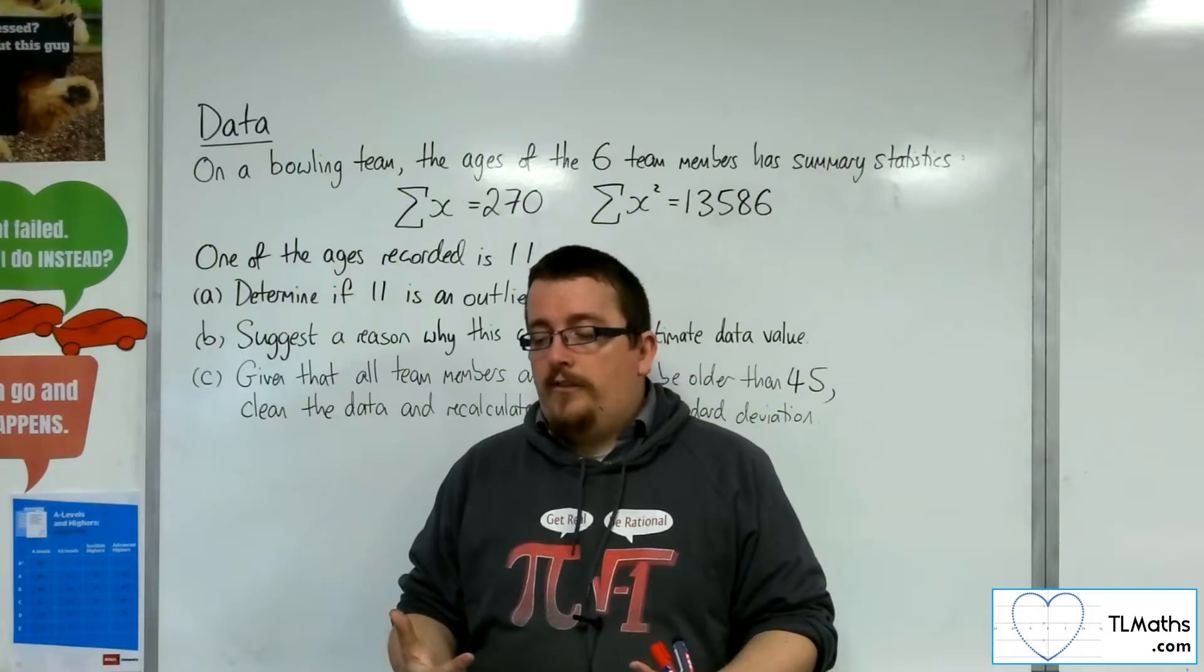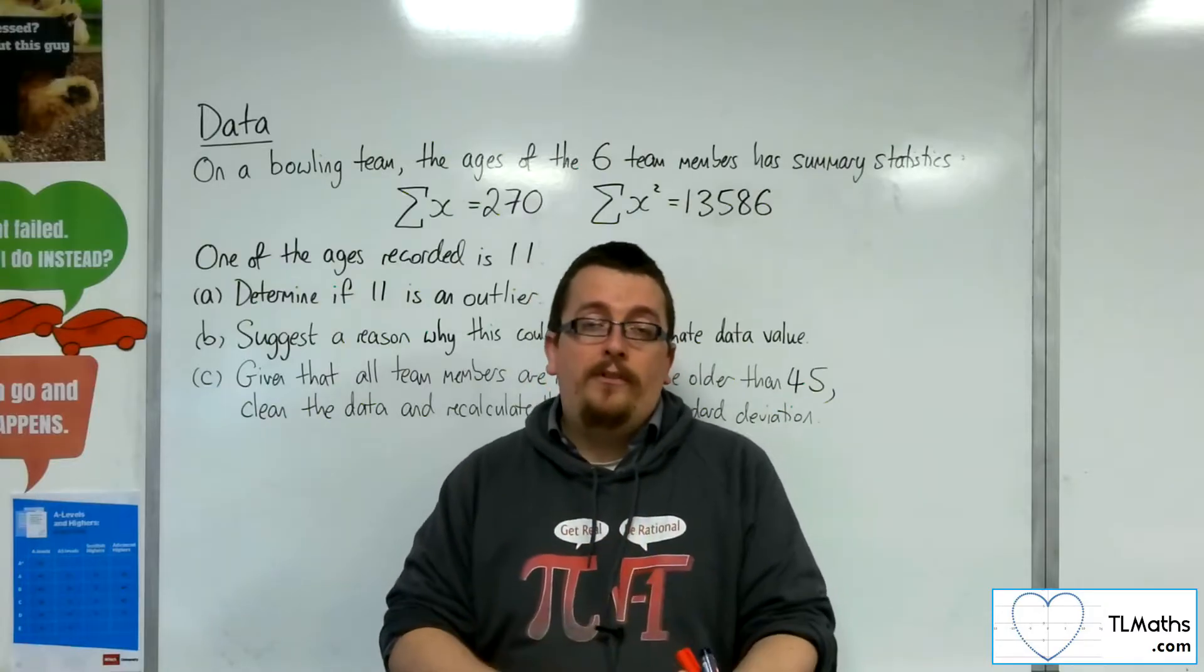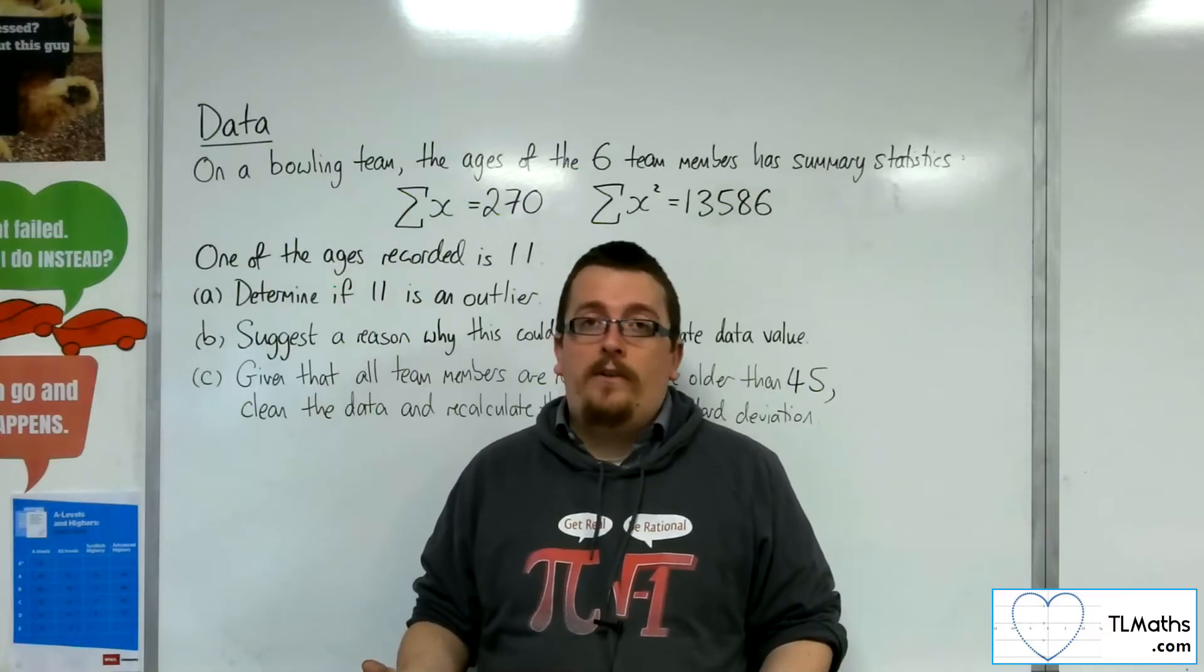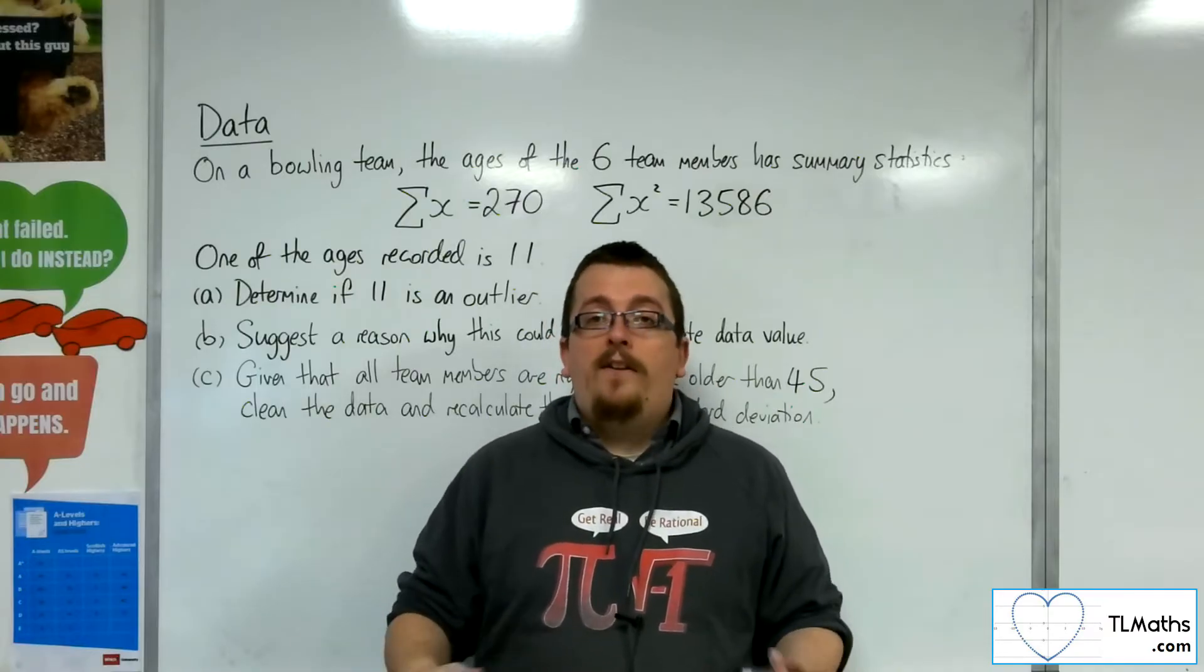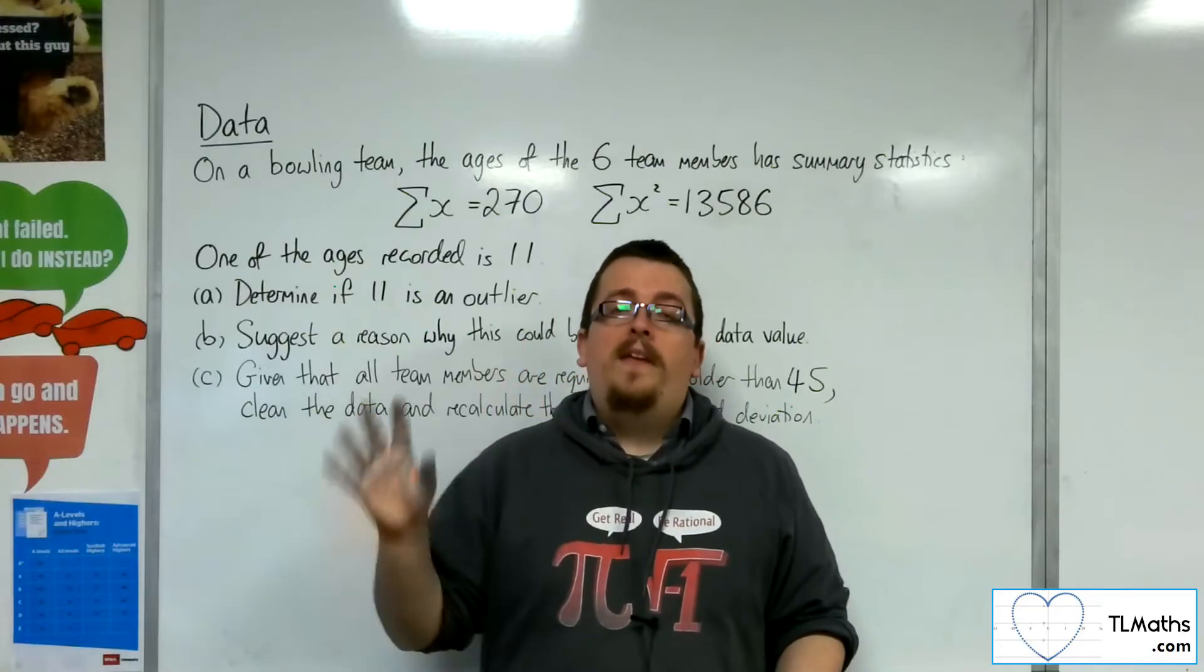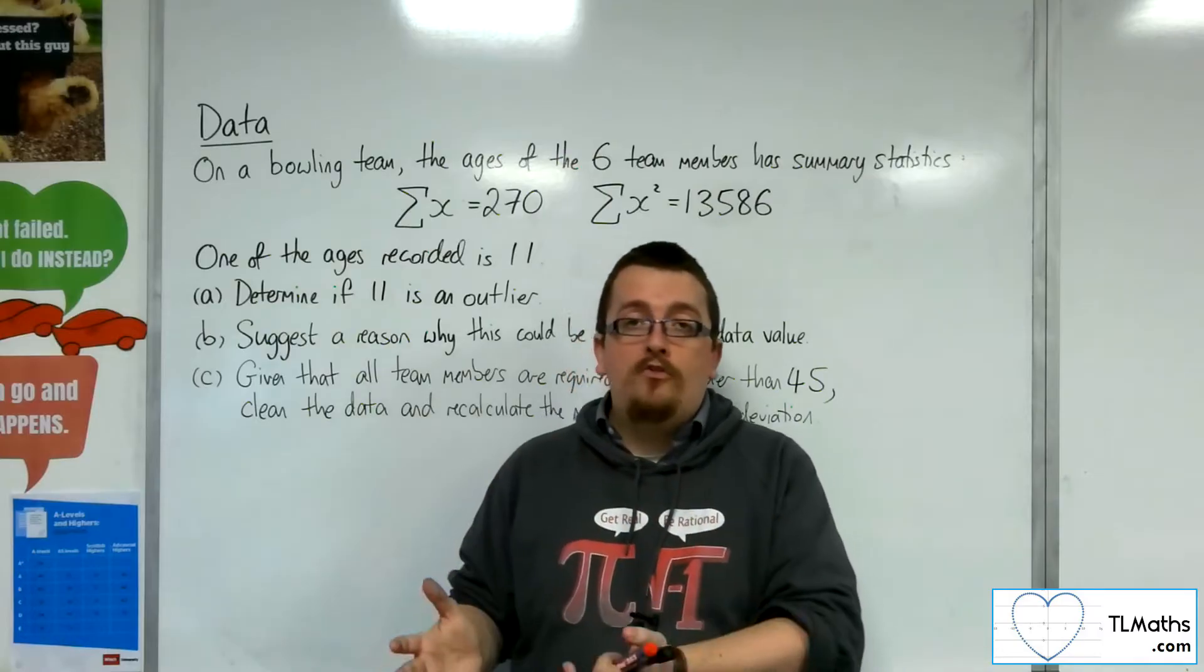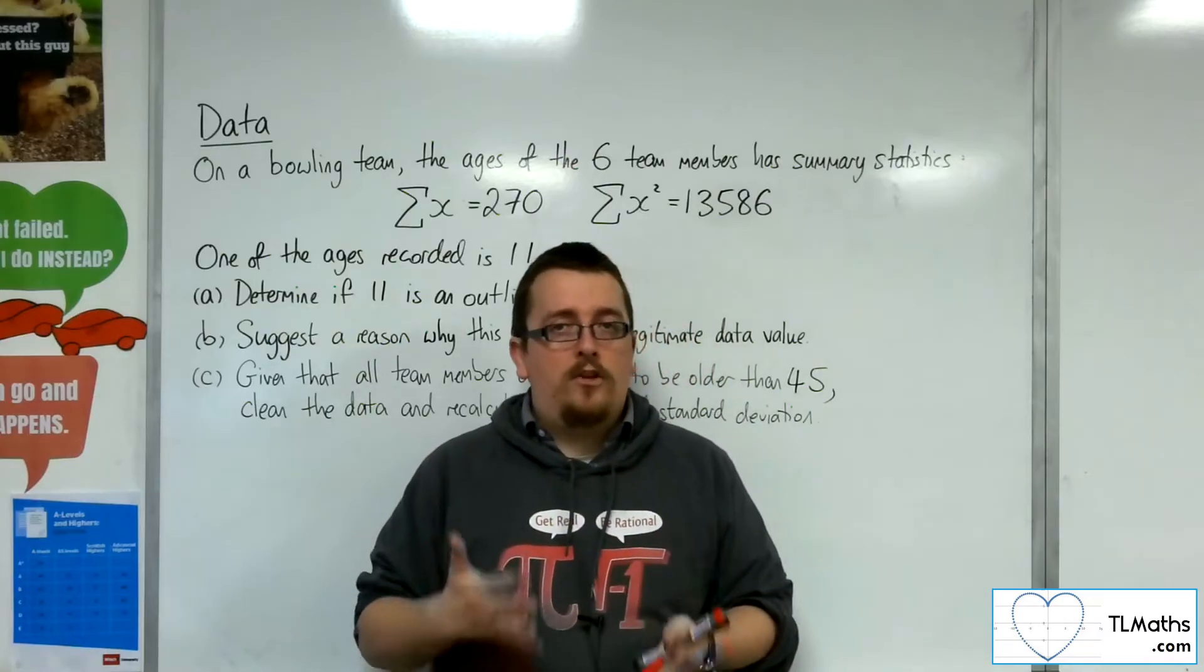There can be cases where the data point clearly doesn't make sense. For example, if I'm inputting the ages of a group of people and I input somebody's age as 205, then clearly that doesn't make any sense. No one has lived anywhere near to 205, so that's clearly incorrect.